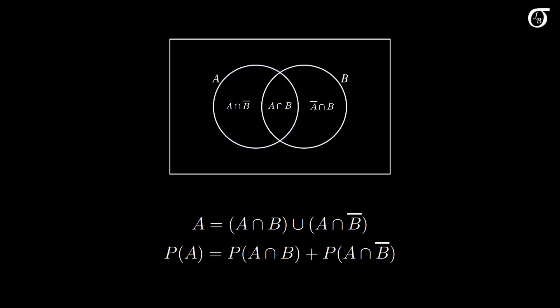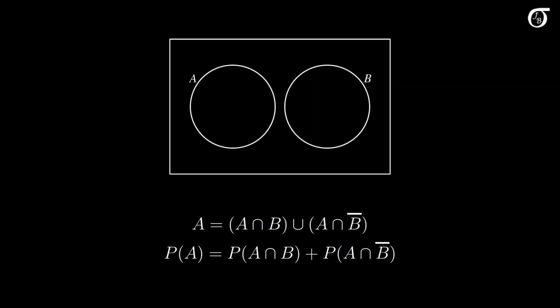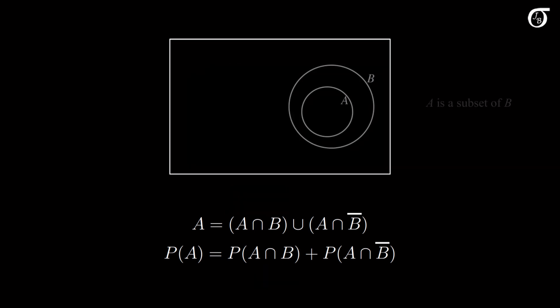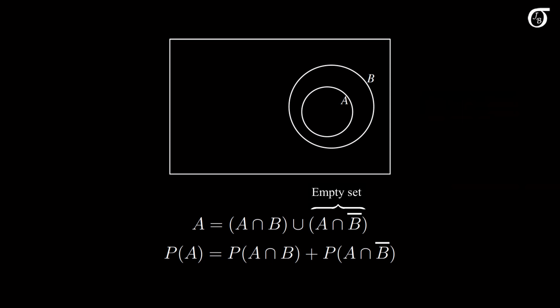This is true whatever the relationship between A and B. If A and B are mutually exclusive, then A intersect B is the empty set, and so the probability of A intersect B is 0, and the probability of A is equal to the probability of A intersect B complement. If A is a subset of B, then the entirety of A intersects with B, and the intersection of A and B complement is the empty set. The probability of A intersect B complement is 0, and the probability of A is equal to the probability of A intersect B.